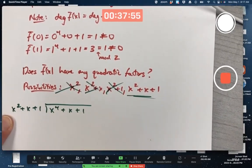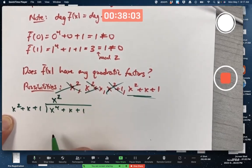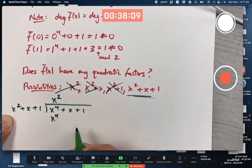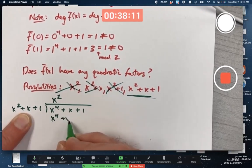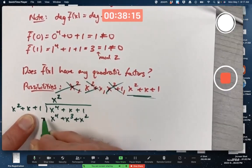Do it in the ordinary way, except do everything mod 2 with the coefficients. What do I have to multiply x squared by to get x to the fourth? Got to multiply it by x squared. Go ahead and do that multiplication and put the answer down here. x squared times x squared is x to the fourth, x squared times x is x cubed, and x squared times 1 is x squared.